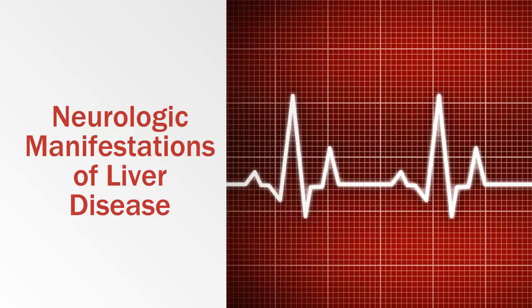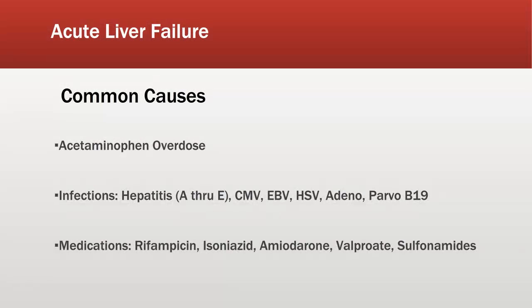Hello everyone. Steve Zuckerman in Baton Rouge, and mercifully for all involved this will be our last lecture about the neurological manifestations or complications of systemic disease. We're going to divide this talk into acute and chronic liver failure, and this is a slide depicting some of the more common causes of acute liver failure. Not going to be required to know this for your neurology examinations, but maybe it's good to know it to show off to your internal medicine colleagues and attendings.